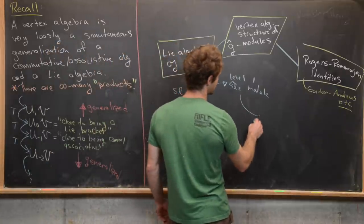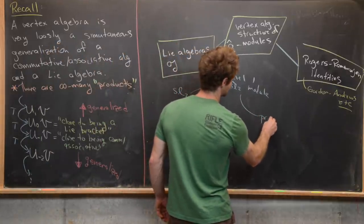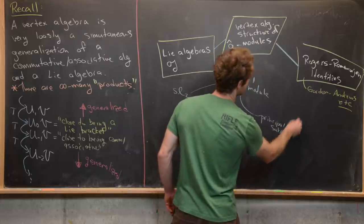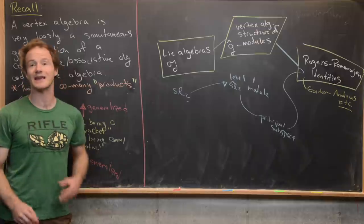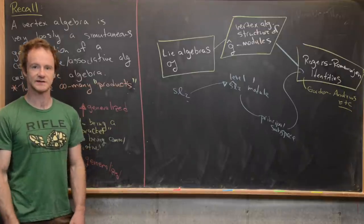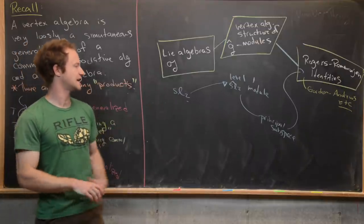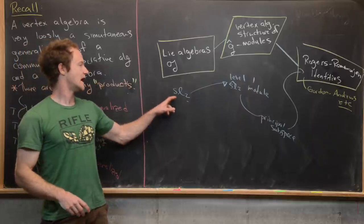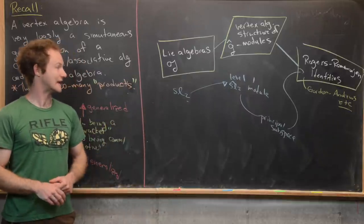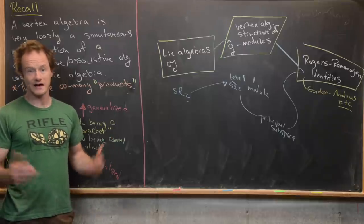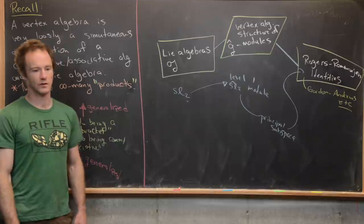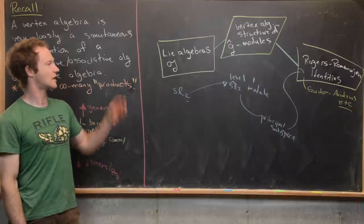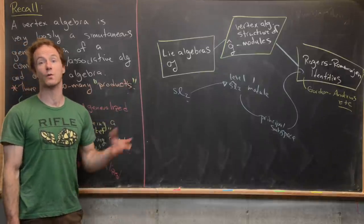And then you take something called a principal subspace of that. And then you take the graded dimension of that principal subspace, and you land at the Rogers-Ramanujan identities. Then you can kind of do similar things for higher level SL₂ modules, or for like SL_n modules at level one, or even like twisted type modules. That's some stuff that's gone on recently as well. Okay, so I'll maybe go ahead and get rid of this. And we'll look at one more thing.